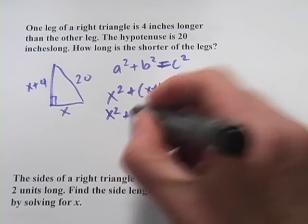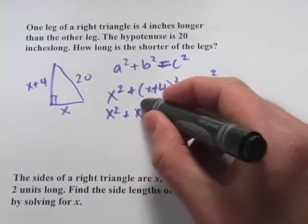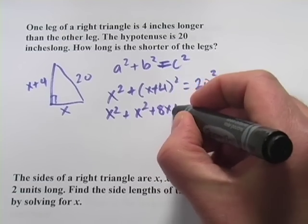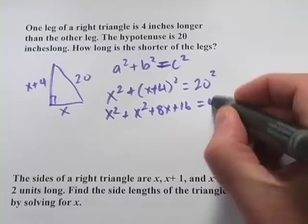So we've got x squared plus, and we'll multiply this out, we get x squared plus 8x plus 16 equals 400.